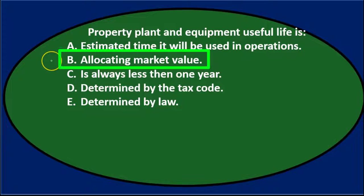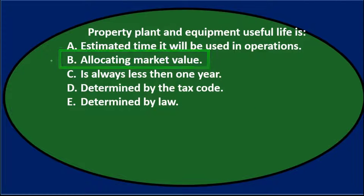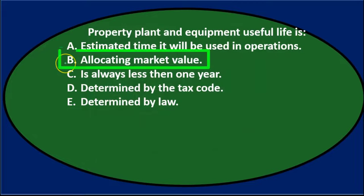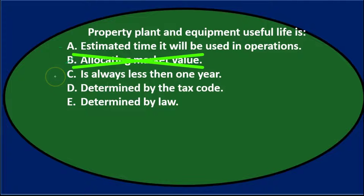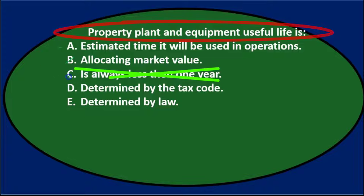B says allocating market value. This could be tempting at first because we might think that the useful life is what we use to allocate depreciation. But note that we're not trying to get to market value — we're getting to book value, or allocating cost. Whenever something says market value with depreciation, be skeptical, because we're trying to line up the cost to the useful life, not market value. C says is always less than one year. Usually it's going to be more than one year because the useful life for property, plant, and equipment is typically over a year.